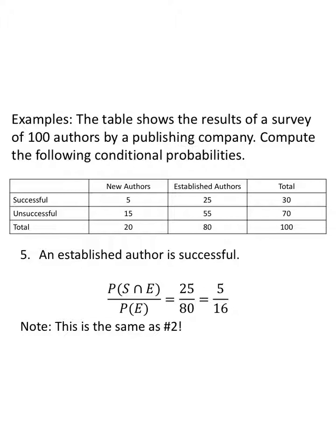For our last example: an established author is successful — same as example two, rewritten. What's given is established, so that goes in the denominator. What we want to know is successful. Successful and established is twenty-five; all established is eighty — giving five-sixteenths. Conditional probabilities: given that one thing happened, what's the probability now of another event? That's it. Thanks for listening, have a great day.